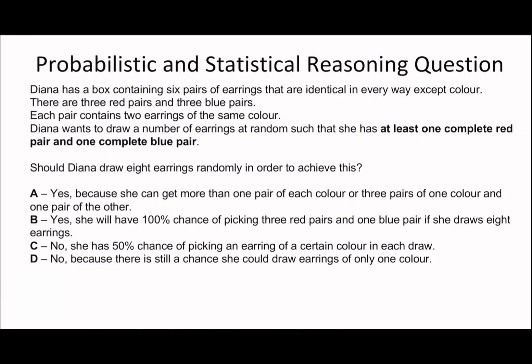So what I mean by that is, if you've got these six pair of earrings, it could be that she draws out all of one colour pair. So she draws out all the blues or all the reds. And then that would leave her with just the other colour. And therefore, she'd just need to draw two more. So let's say she draws out three blue pairs, that's six earrings. And she'd just have to draw out one red pair, which is just the final two earrings. So in total, that's eight earrings. So should she draw out eight earrings randomly in order to achieve this? Yes, I would say that's true. So it's not going to be C or D.